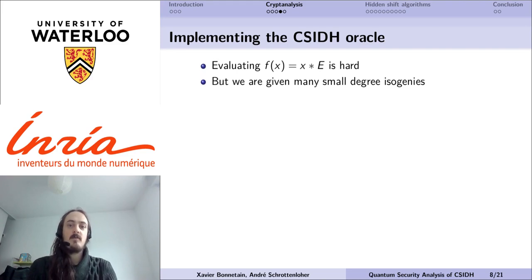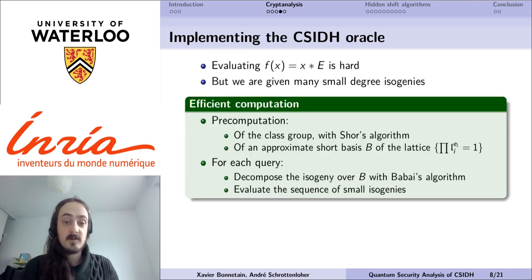Now, in order to make our quantum attack, we first need to implement the CSIDH oracle, that is, a quantum circuit that, given an element of the class group, evaluates the group action from a fixed curve. This computation is, in general, hard to do. However, in the case of CSIDH, we are given many small-degree isogenies by the protocol, and we can leverage that to make this evaluation more efficient. This is done in two steps.